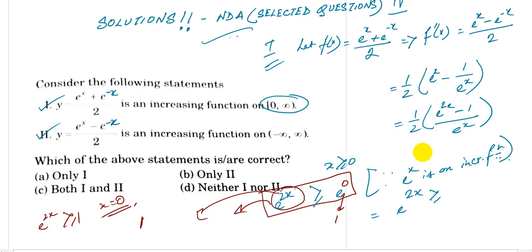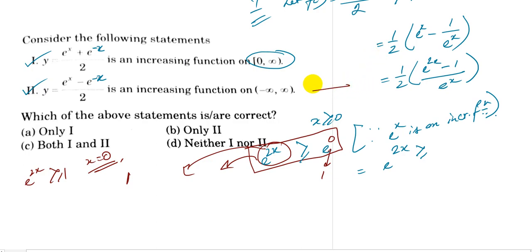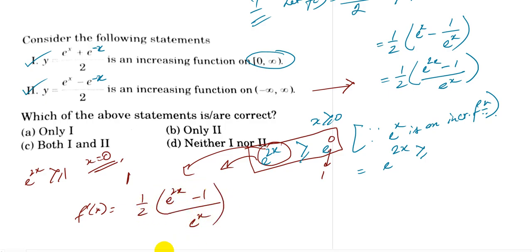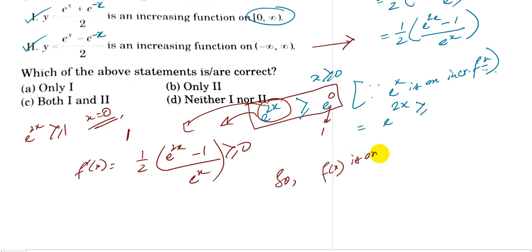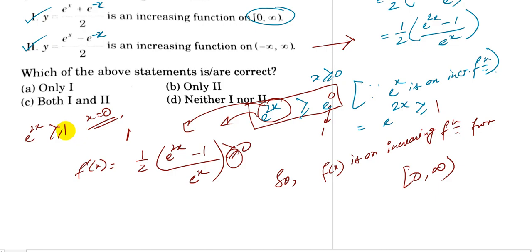From this we deduce that f'(x) equals one half of e to the power 2x minus 1 divided by e to the power x, which is greater than or equal to 0. Therefore f(x) is an increasing function on the closed interval zero to infinity. So statement one is verified and correct.